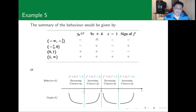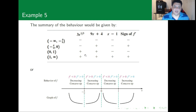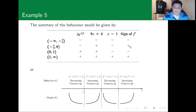The factor (9x + 4) is negative on (-∞, -4/9) and positive elsewhere. The factor (x - 1) is negative for x < 1 and positive for x > 1. The factor 3x^(1/3) is negative for negative x and positive for positive x. Combining these, f' is negative on (-∞, -4/9), positive on (-4/9, 0), negative on (0, 1), and positive on (1, ∞).